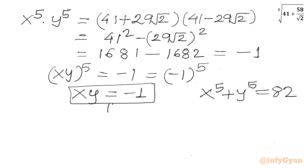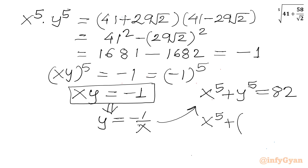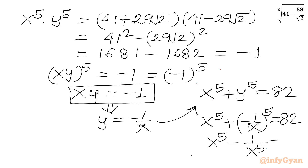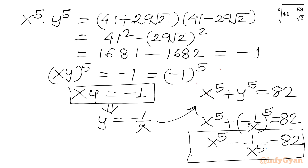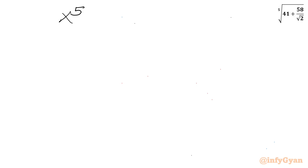From xy equal to negative 1, we can write y is equal to negative 1 over x. Our summation equation was x to the power 5 plus y to the power 5 equal to 82. Substituting y, I will write x to the power 5 plus negative 1 over x whole to the power 5 equals 82, or x to the power 5 minus 1 over x to the power 5 equals 82.